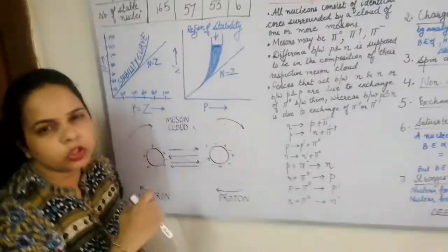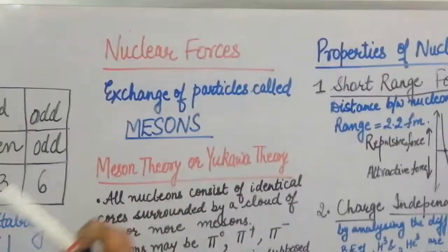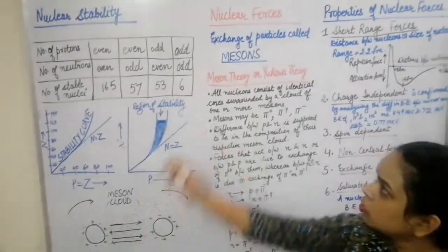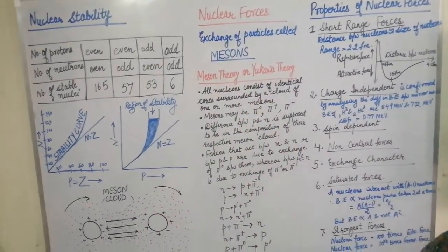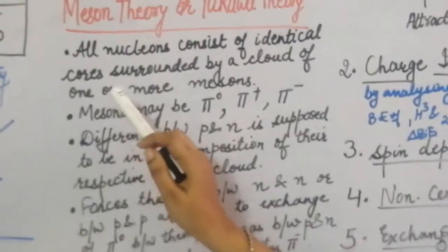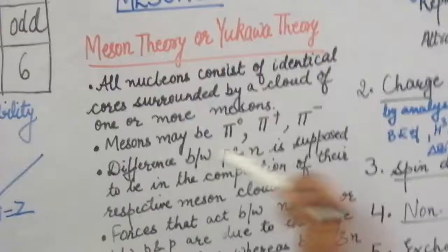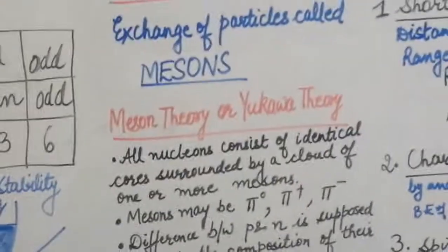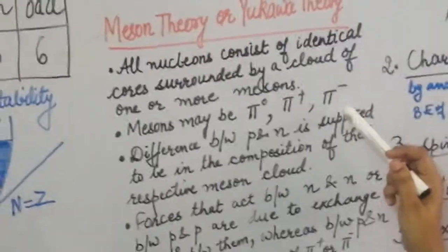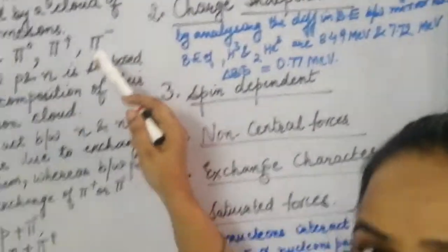Without these mesons it is not possible to keep protons and neutrons inside the nucleus. The meson theory predicted that all nuclei consist of identical cores surrounded by a cloud of one or more mesons. These mesons could be neutral (pi naught), positively charged (pi positive), or negatively charged (pi negative).